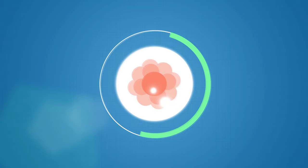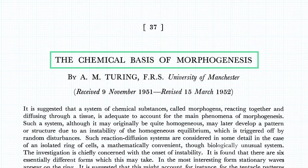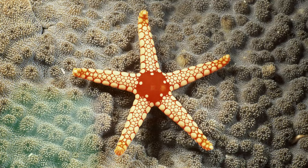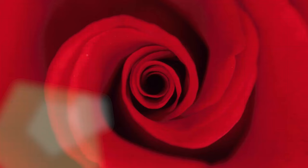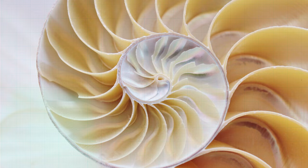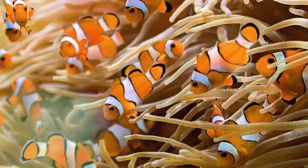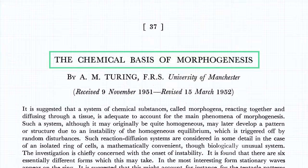So in 1952, Turing published a paper called The Chemical Basis of Morphogenesis. Within it, he proposed that the diversity of patterns we see in nature can be explained by a mathematical model called the Reaction Diffusion System.